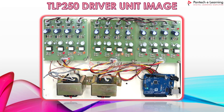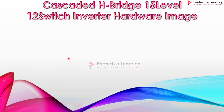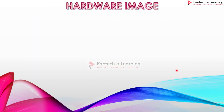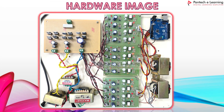Next, let's see the cascaded H-bridge inverter hardware image. Here we have used three step-down transformers: one 12-volt, one 6-volt, and one 18-volt step-down AC transformer. The AC voltage from each transformer is rectified and filtered using a rectifier and capacitor, and then fed to the inverter circuit. The load used is a 5-watt resistive load, and the output can be measured across this load resistor.